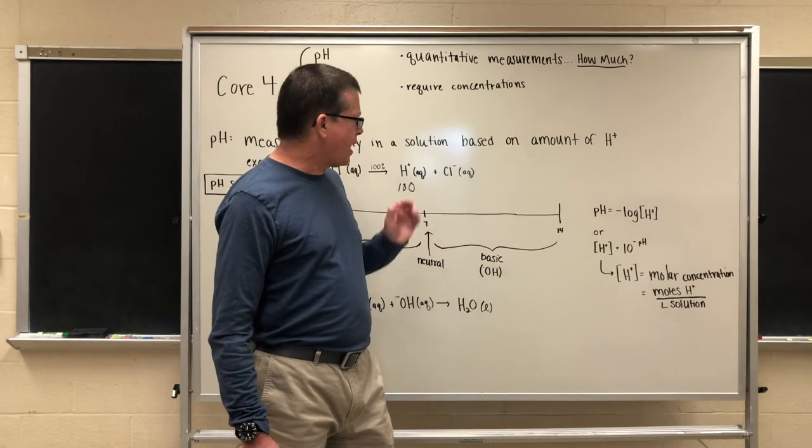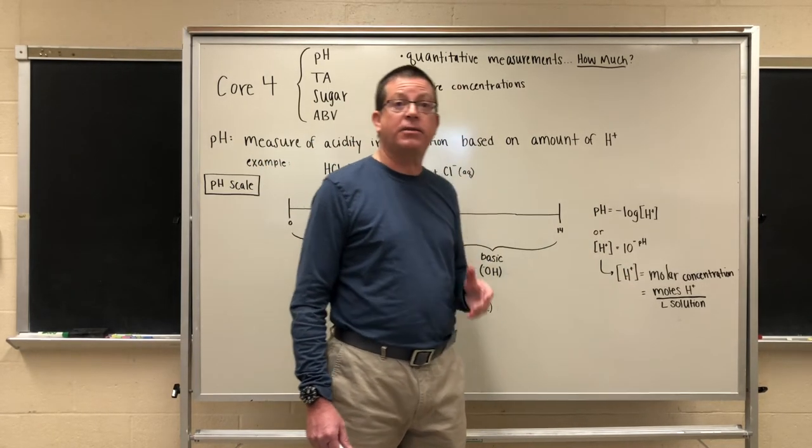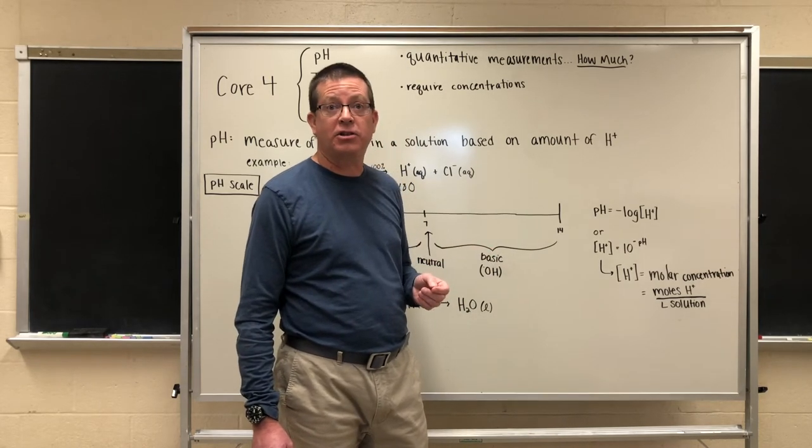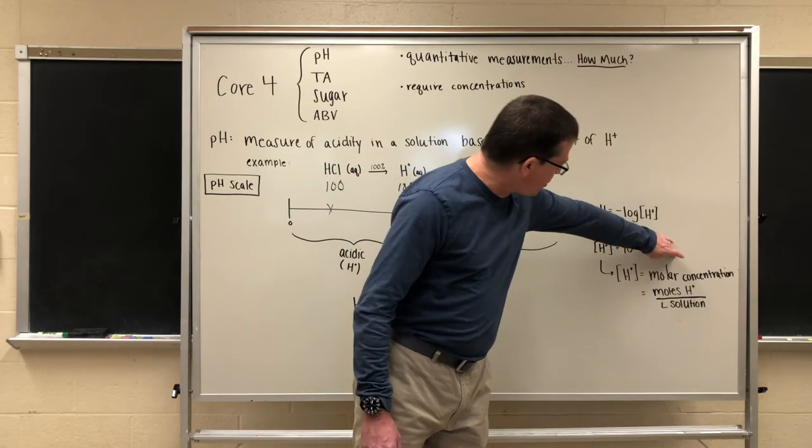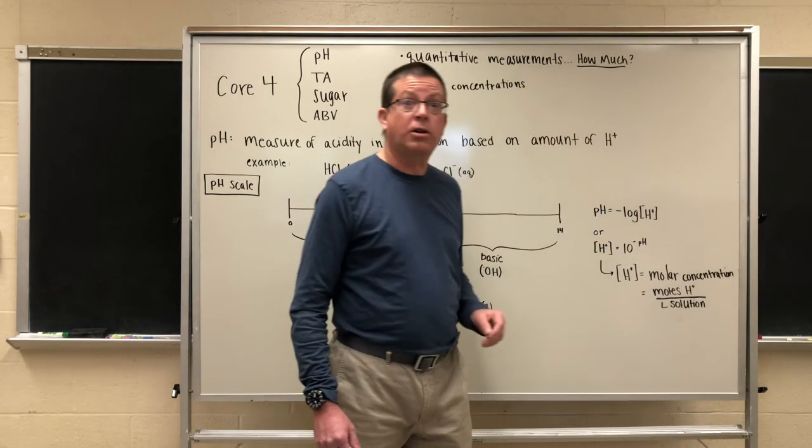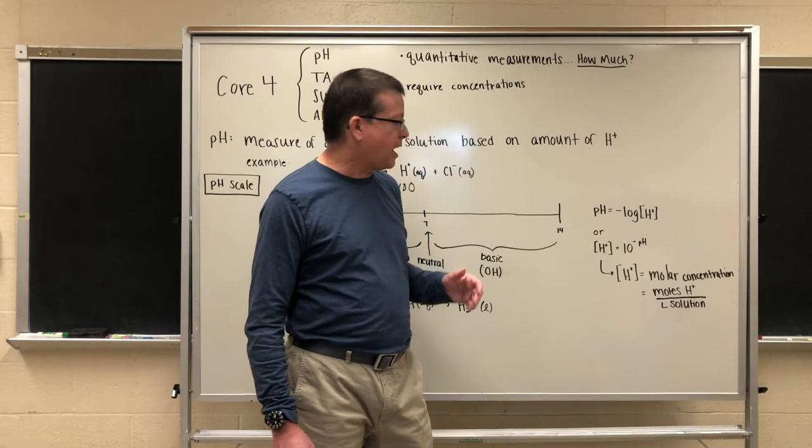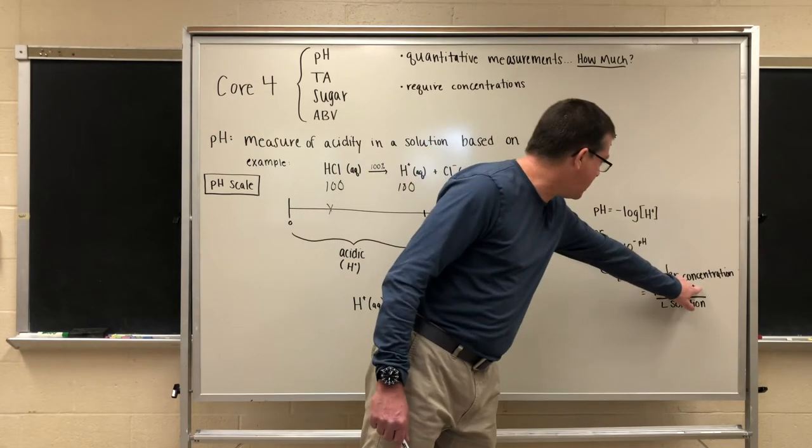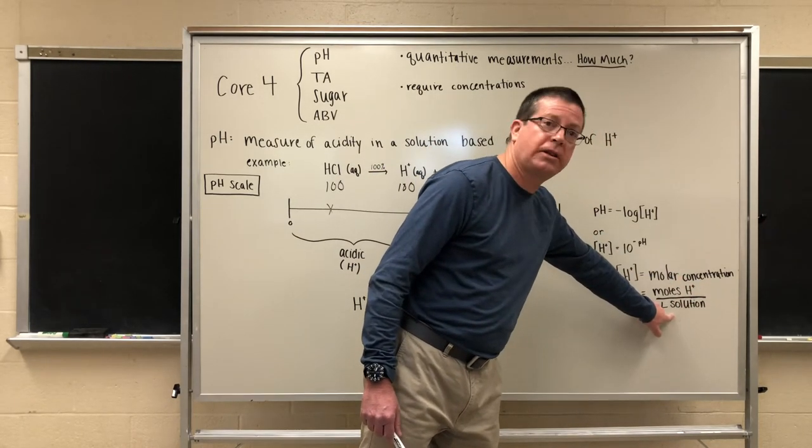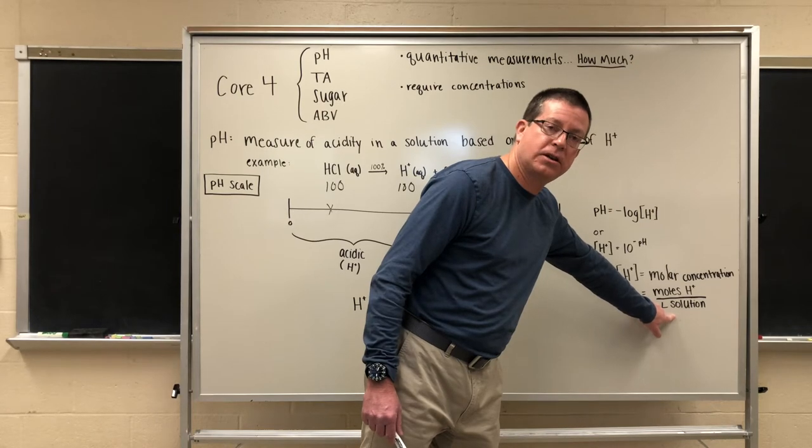Once we have that hydrogen ion concentration we have to talk about the unit of that concentration. This is a unit we use in chemistry often called molar concentration or molarity and we define it as an amount in terms of moles of hydrogen ion contained per liter of solution which in our case would of course be liters of kombucha.